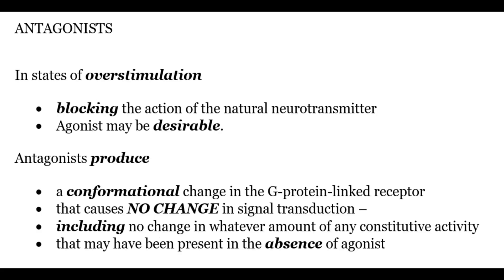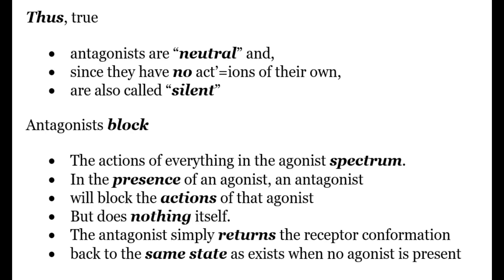Now let's discuss what happens when an antagonist is present at the receptor. In states of overstimulation, blocking the action of the natural neurotransmitter may be desirable. An antagonist produces a conformational change in the receptor that causes no change in signal transduction, including no change in the constitutive activity present in the absence of agonist. True antagonists are sometimes called neutral or silent since they have no action of their own. The antagonist simply returns the receptor conformation back to the same state as exists when no agonist is present.